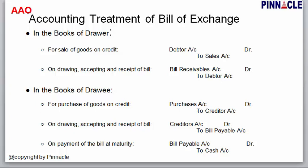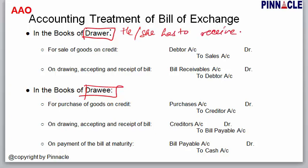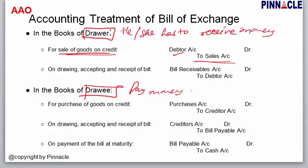Now, before we look at drawing a bill, let's see the entries in both books — drawer's books and drawee's books. When goods are sold on credit, the normal entry is: debit the debtor's account and credit the sales account. Debtor is the receiver of goods, so by the golden rule of accounting — debit the receiver. Sales is our source of revenue, so we credit all revenues and incomes.